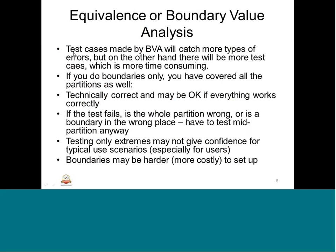The test cases made by boundary value analysis will catch more types of errors. The system behavior at the boundary could change. Suppose the system is supposed to take a variable from 1.0 to 5.0, and we are trying to test 0.9, 4.9, or 5.1 — the system behavior should be predictable. The chance of catching errors at the boundary is higher — that is why we need boundary value analysis. More test cases means it is more time consuming, but it is equally important to identify the BVA — the boundary value analysis.